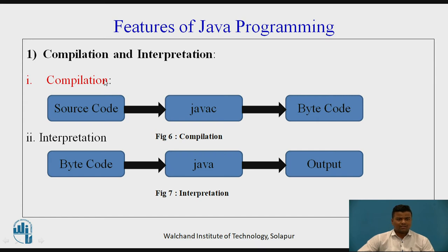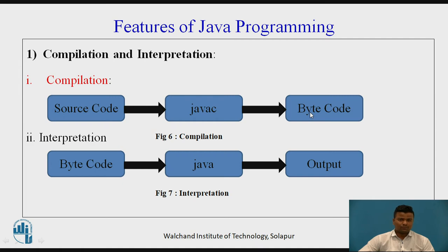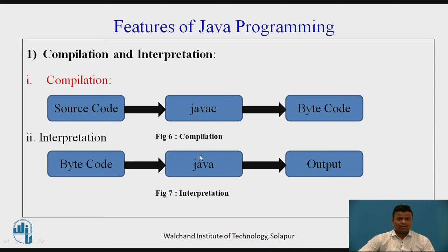In compilation, we convert source code into output in two steps. First is compilation — the JDK (Java Development Kit), which acts as the Java compiler, converts source code into bytecode, producing a class file. Second is interpretation — the bytecode (class file) is then converted into output with the help of the Java interpreter, which is also part of the Java Development Kit.